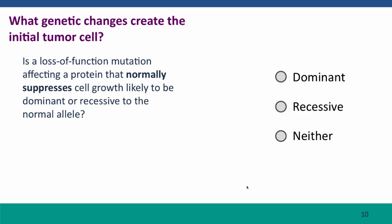Here's a question tying together ideas of dominance and recessiveness with ideas of protein functions controlling cell growth: Is a loss-of-function mutation in a protein that normally suppresses cell growth likely to be dominant or recessive to the normal allele?